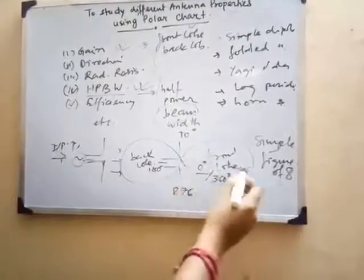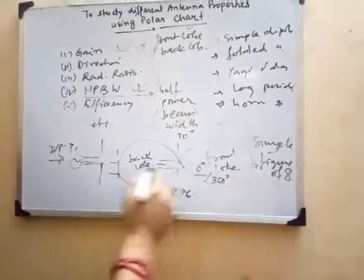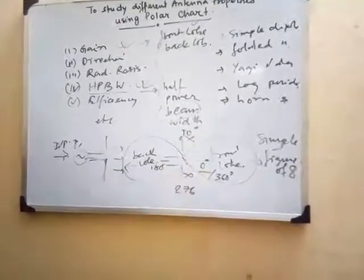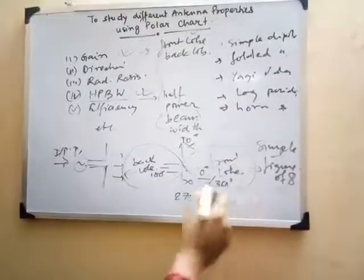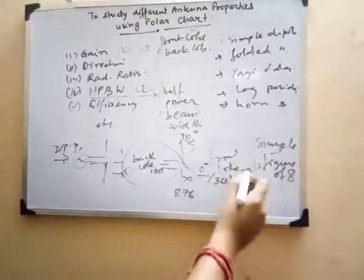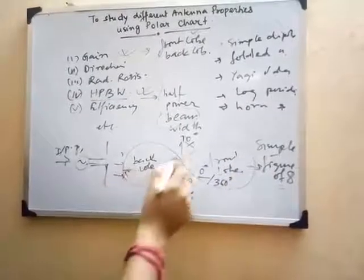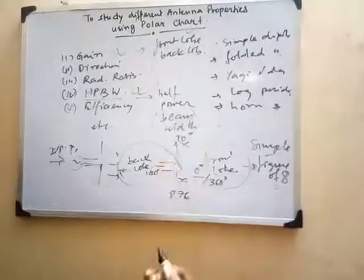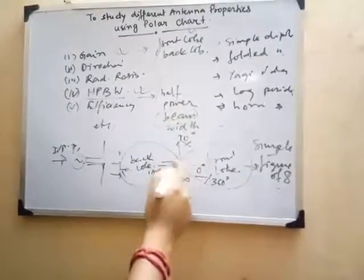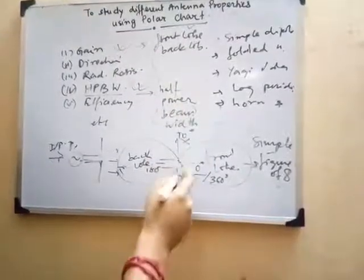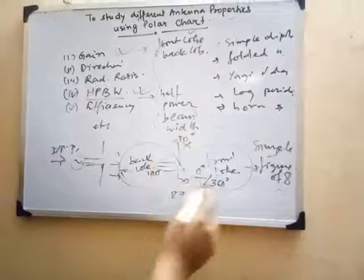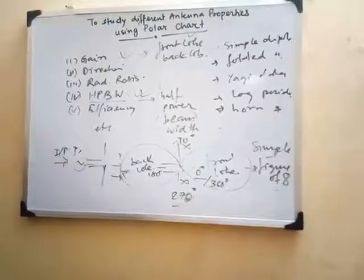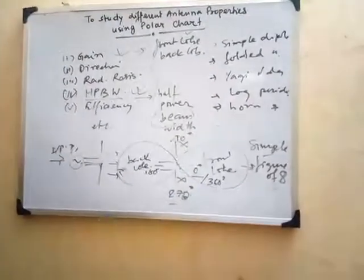The radiation is directed only in the front and back directions. There is no radiation at 90 degrees or 270 degrees — that is, perpendicular to the axis of the antenna. This is the general property of a dipole antenna.